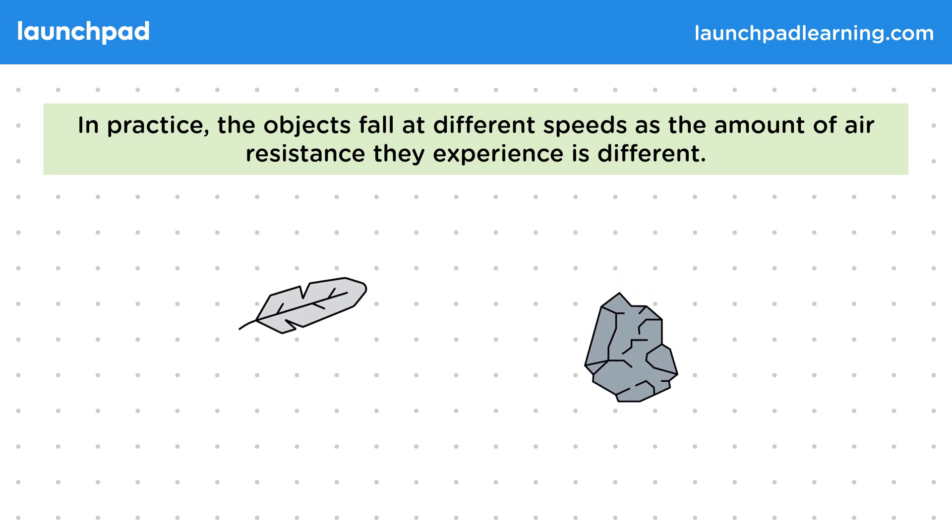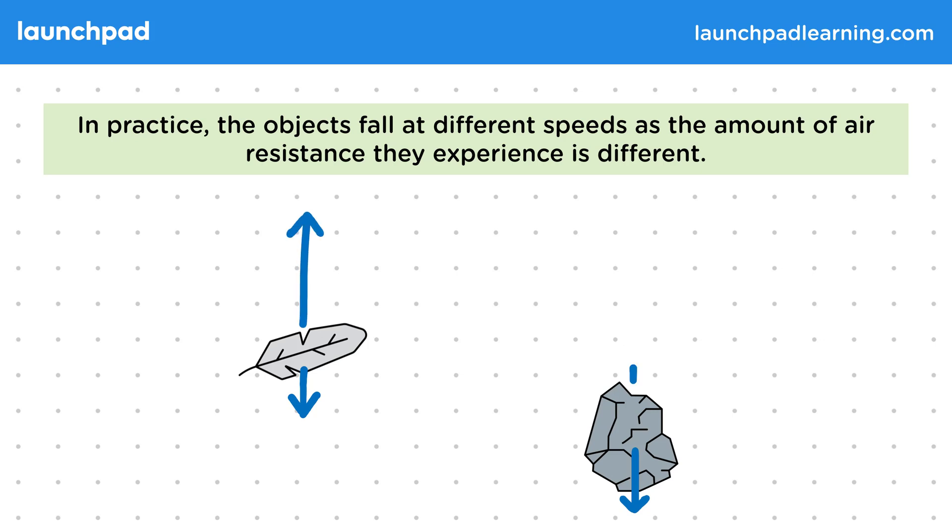Now when we drop them, we see the rock fall faster than the feather. Does this mean that the rock experiences a greater acceleration due to gravity? Well let's explain this by considering the forces acting on each. Both are being pulled down by their weight, and both experience air resistance against this.